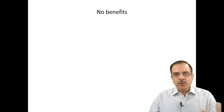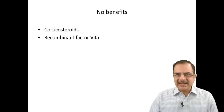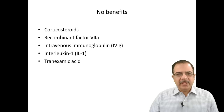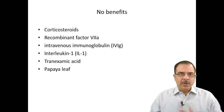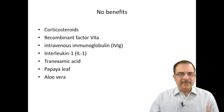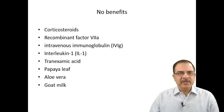There is no clinical benefit of steroids in dengue fever. Recombinant factor VIIa, IVIG, interleukins, and tranexamic acid also do not have proven benefit. Papaya leaf extract, aloe vera juice, and goat milk — though popular — have no benefit in dengue hemorrhagic fever.